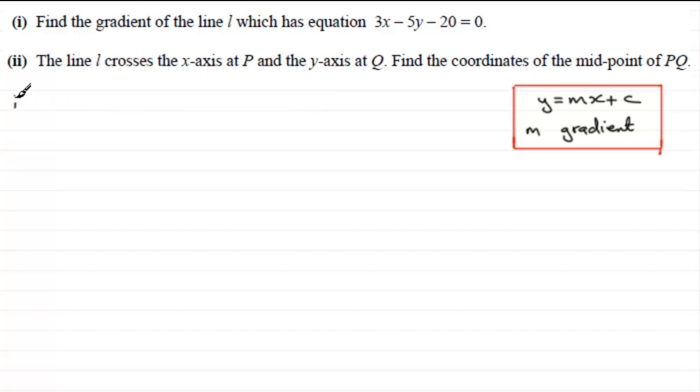So we've got 3x minus 5y minus 20 equals 0. And what I'm going to do is add 5y to both sides because it's negative. So that gives us 3x minus 20 equals 5y.